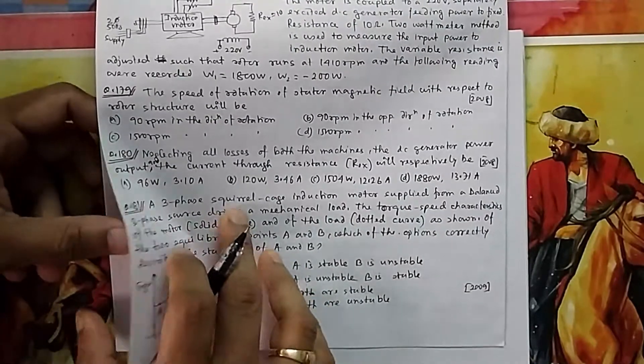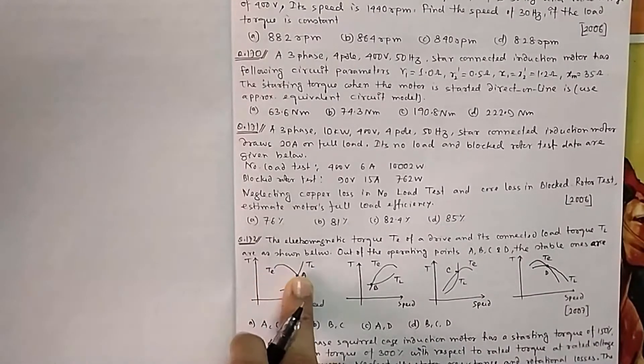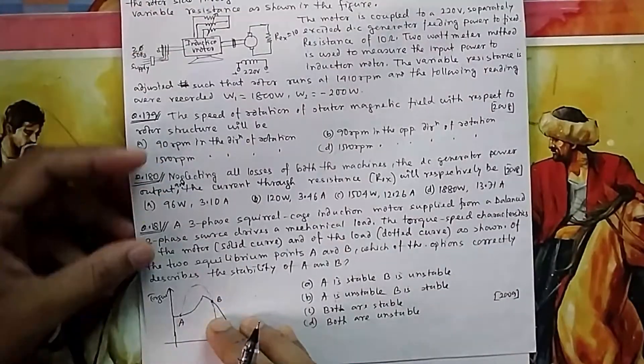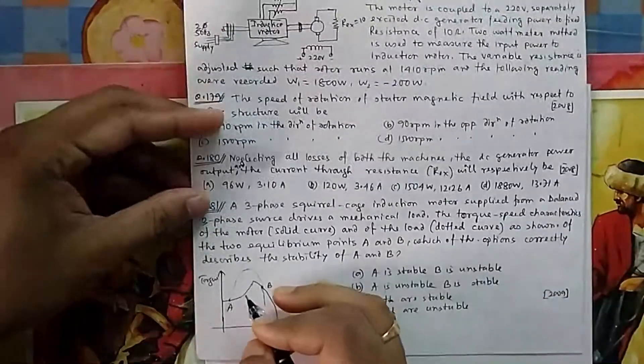The question is like this: TE is the motor curve and TL is the load curve. TL is the dotted one, the load curve, and this one is your TE, the motor curve. The idea is the same.